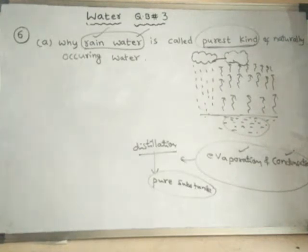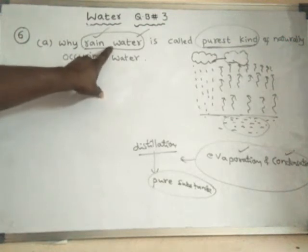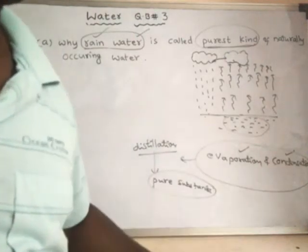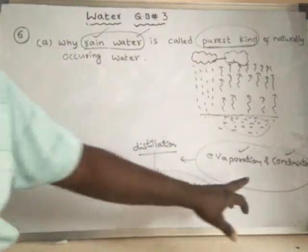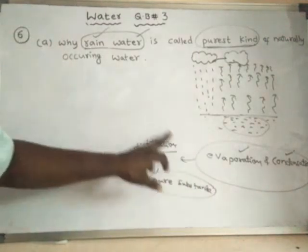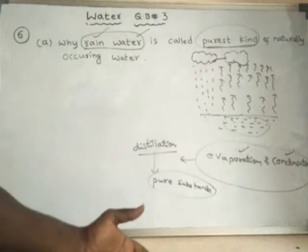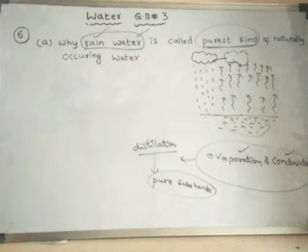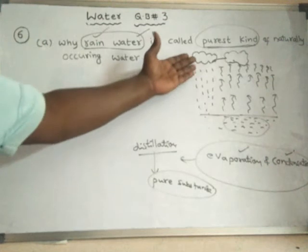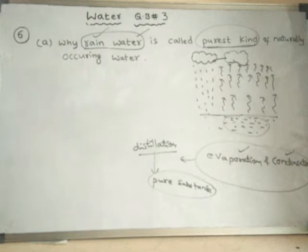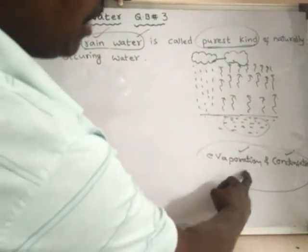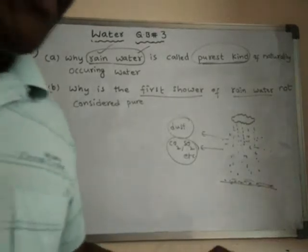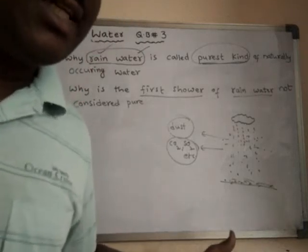Therefore rain water is almost said to be distilled water and hence it is the purest kind of naturally occurring water. Why is rain water called the purest kind? Because its formation involves both evaporation and then condensation. When a substance is formed by these two processes together — evaporation followed by condensation — that process is called distillation. The formation of rain water is a natural distillation, so rain water is nothing but distilled water, which is the purest form of water.